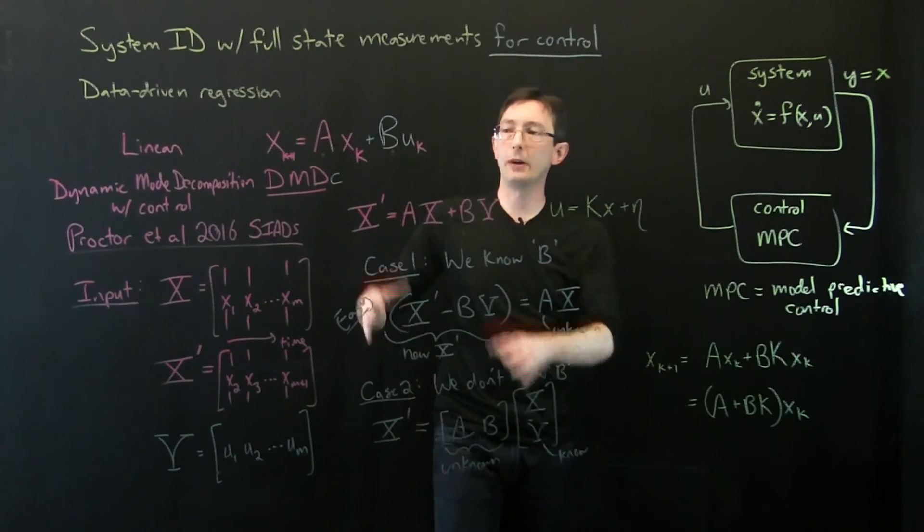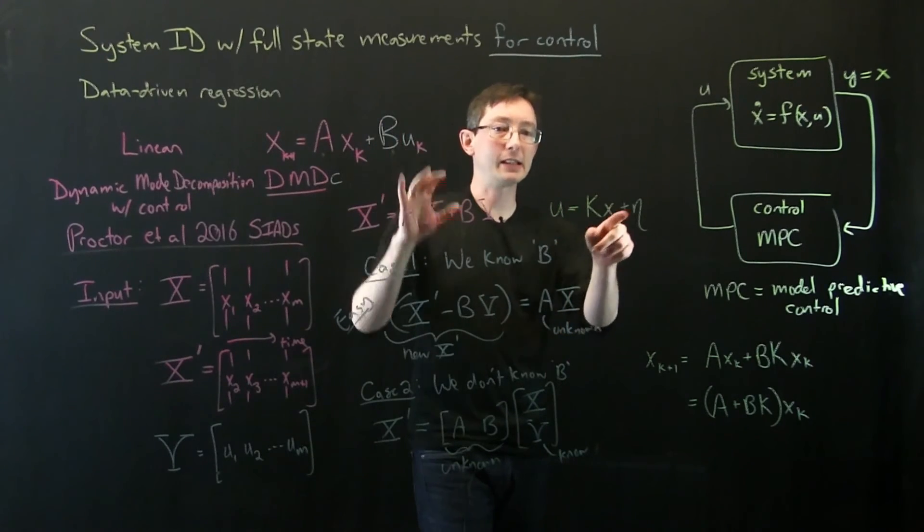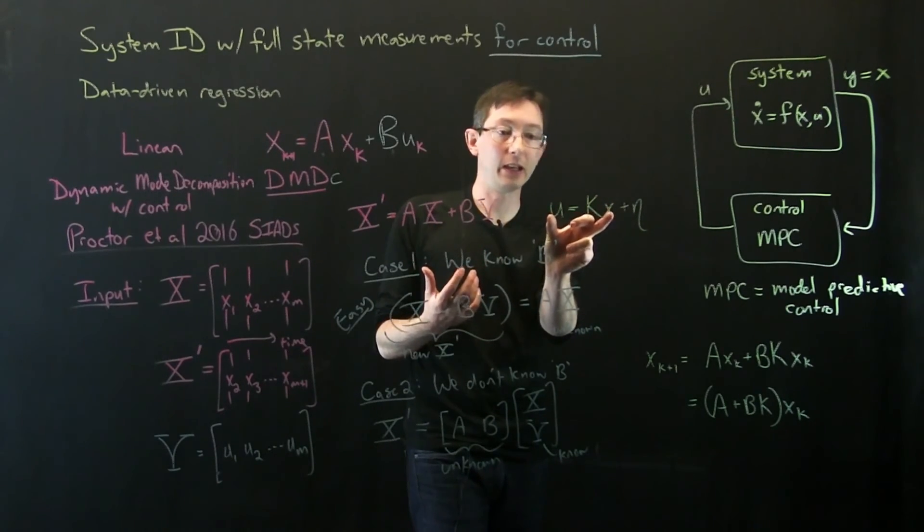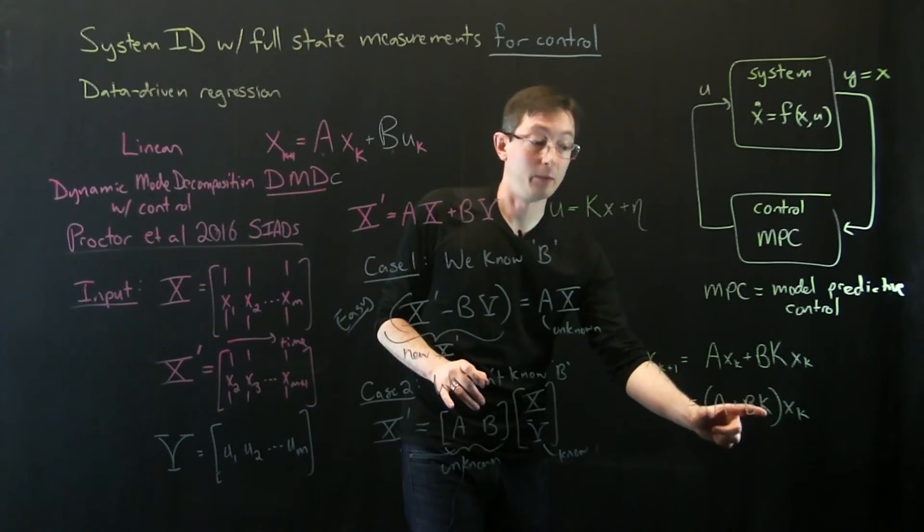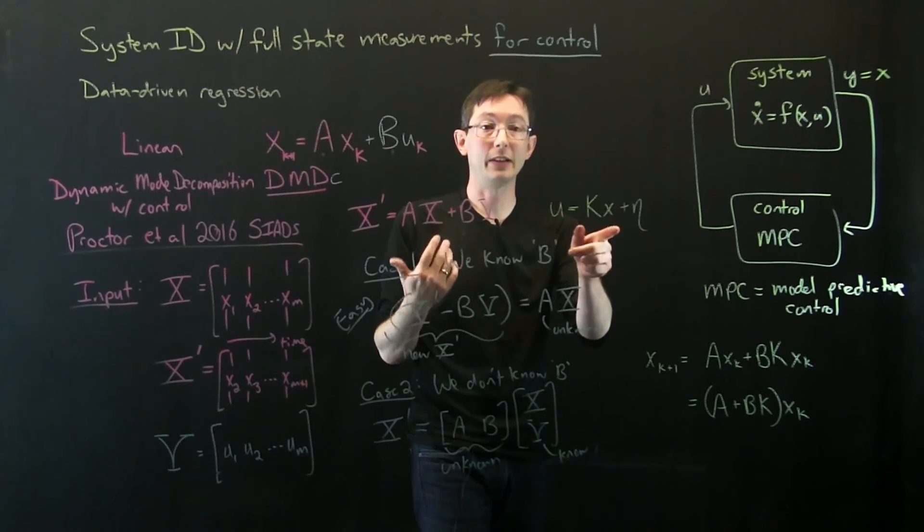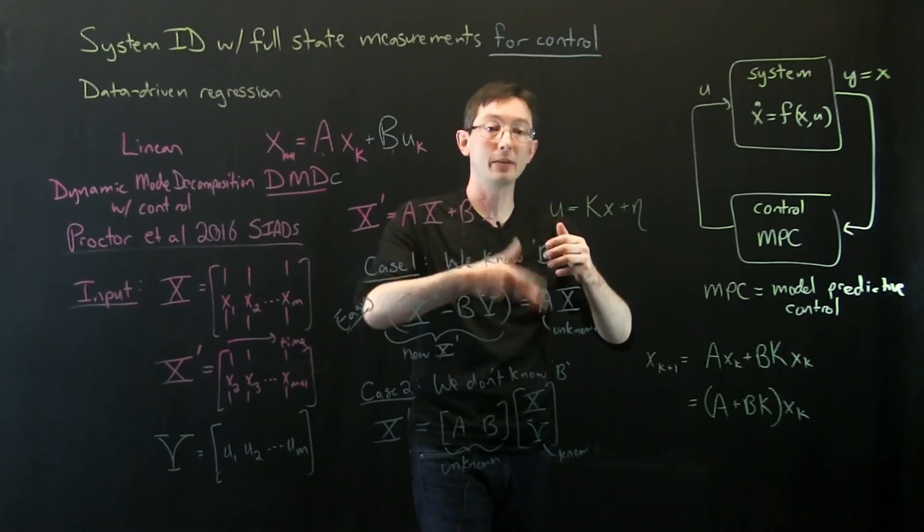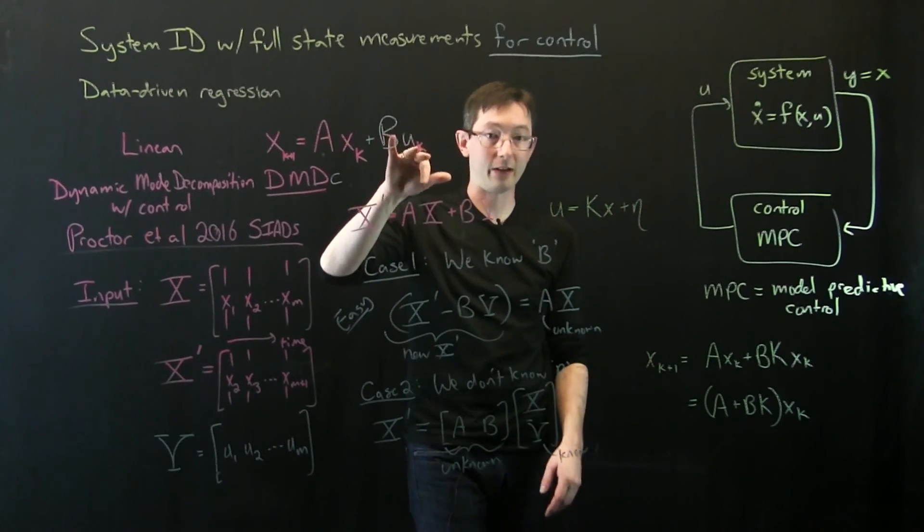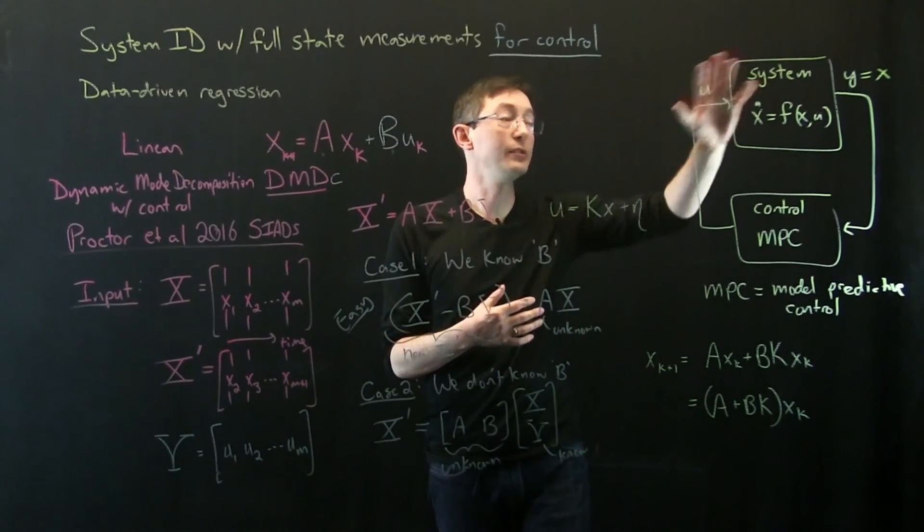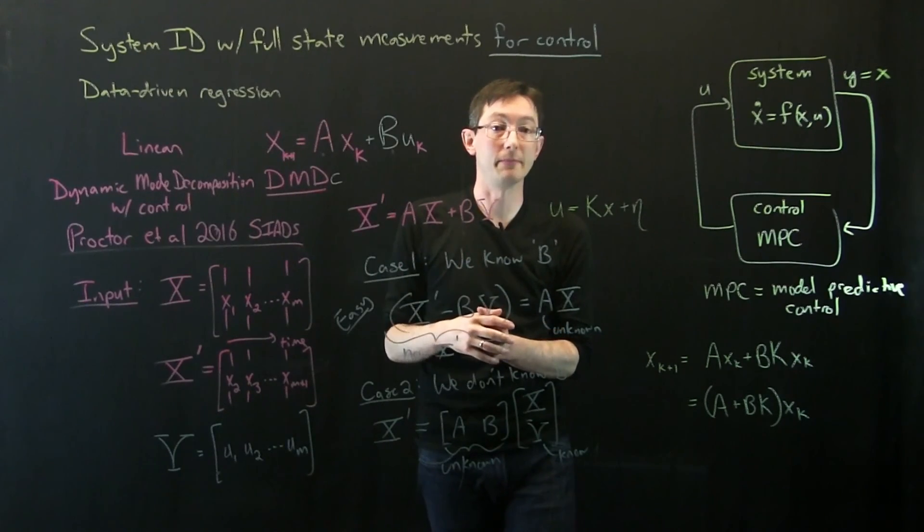So let me just recap. We have a procedure to identify models A and B from data. If my system is actively being controlled, U equals KX, then there's a fundamental ambiguity. If I plug in U equals KX here, I get another dynamical system with a different A matrix and this is equally valid to this. So if I have a system that's being actively controlled with a feedback signal, I have to kick the control every once in a while. I have to kick U to get a little bit more information out, to get information out of the system to disambiguate A and B. So we're going to code this up in an example. We'll see how it works. You can use these models directly for model predictive control or to understand the underlying dynamics and sensitivity of your system. Thank you.